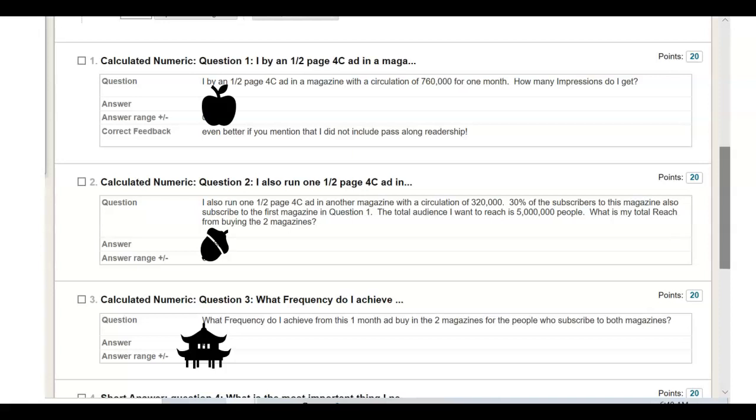So what you have to do here is calculate the total unduplicated, unique circulation with the two magazines. And then to get reach, you have to calculate what percent that total unduplicated circulation is of the amount of the target.